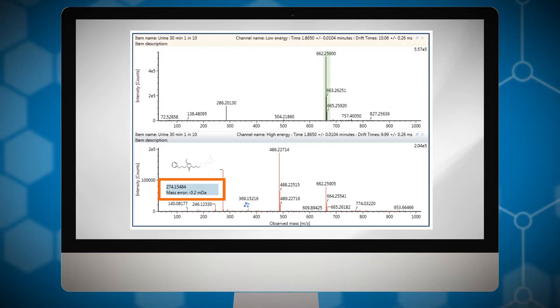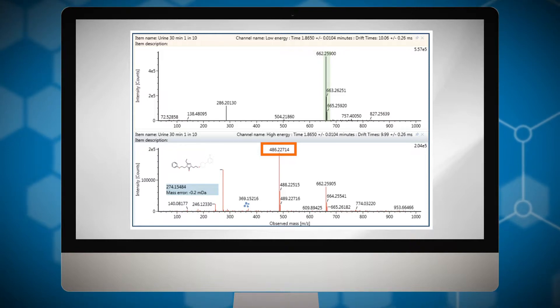In this example, the ion at mass to charge 274 corresponds to the phenoxyethyl triazole part of nifazodone. Furthermore, the ion at mass to charge 486 confirms the presence of a hydroxylation of the metabolite.